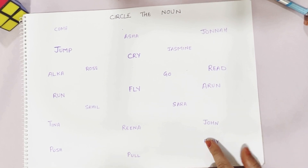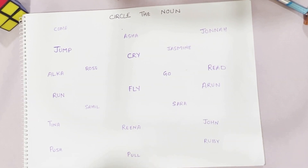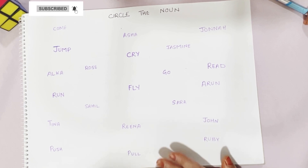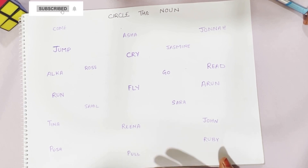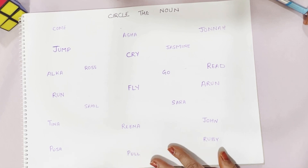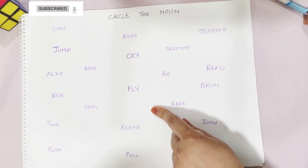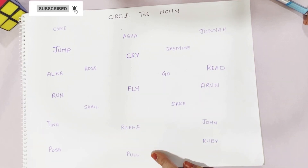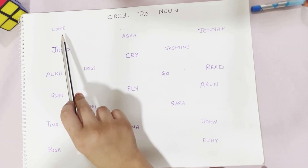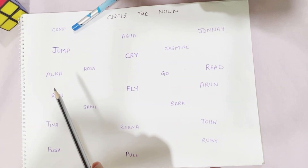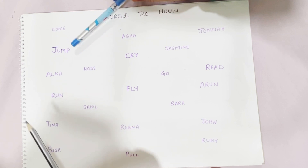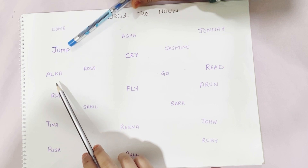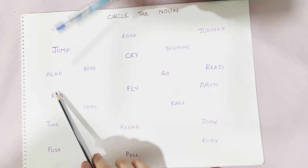Here we are checking nouns. Do you know what a noun is? A noun is the name of a person, place, or animal. Like, your name is Asha — so Asha is the noun. You have to find the noun from the list. Can you read them? Come — is 'come' the name of someone? No. Is 'jump' a noun? No. Next is Alka — is it a noun? Yes. Circle it.